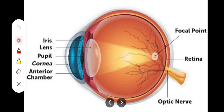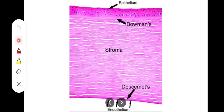Histologically, the cornea has five layers. The uppermost layer is the corneal epithelium — a stratified squamous non-keratinized type of epithelium. Deep to it is an external elastic lamina called Bowman's membrane, which is the anterior elastic lamina of the cornea.